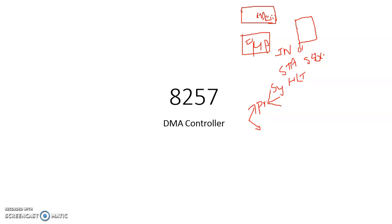Before the actual act of data transfer, the processor and the data source are making a communication even before the actual data transfer takes place. This is required because the data source and the microprocessor are not synchronized to the same clock — the data source may be a slower or delayed device. Such a data transfer is referred to as asynchronous data transfer. In asynchronous data transfer, there is a do-and-pro communication — a handshake between the processor and the data source before the actual act of data transfer occurs. Hence asynchronous data transfer is further referred to as handshake mode of data transfer.